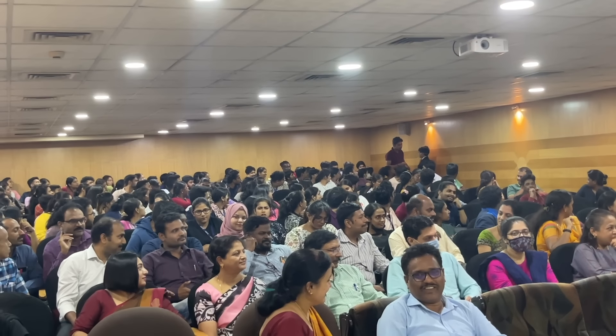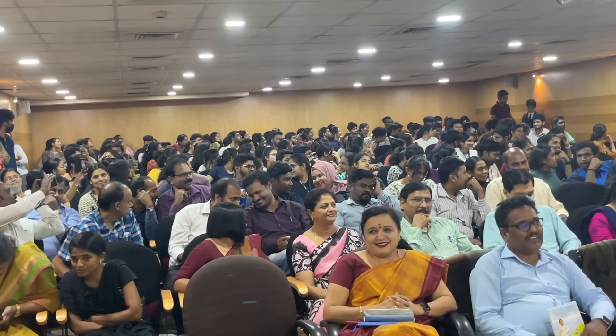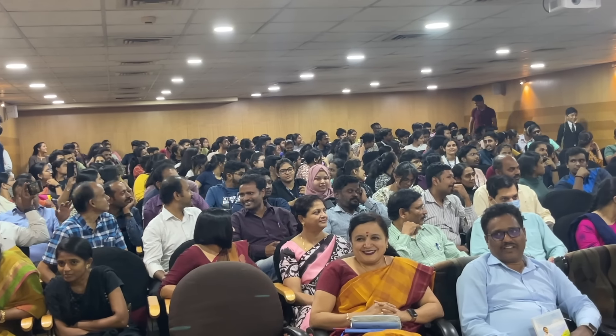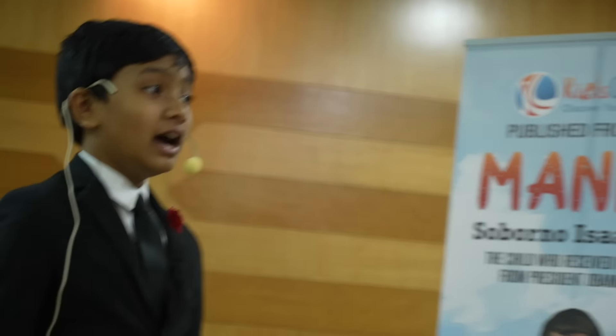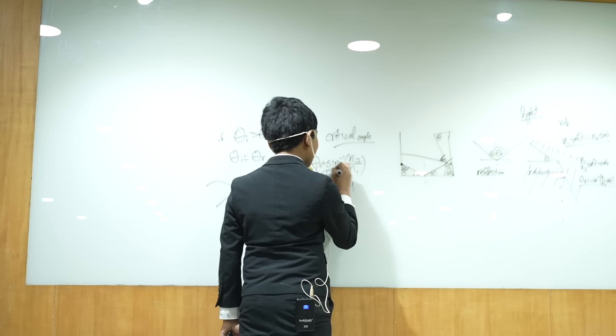Student: First, refractive index. We can find it with the refractive index. Refractive index equals one upon sine c — the c is the critical angle. Teacher: It does have something to do with the index of refraction, so I guess you did better than last time. N2 cannot be greater than N1. Good. Finally, a good answer regarding something mathematical.